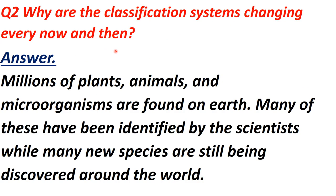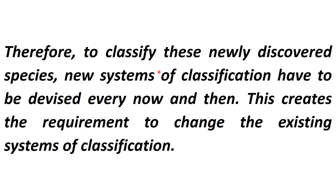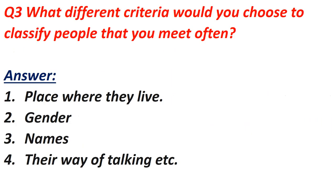Question 2: Why are classification systems changing every now and then? Answer: Millions of plants, animals, and microorganisms are found on Earth. Many have been identified by scientists, while many new species are still being discovered around the world. To classify these newly discovered species, new systems of classification have to be devised, creating the requirement to change the existing system of classification.